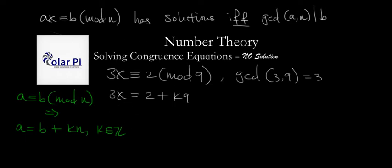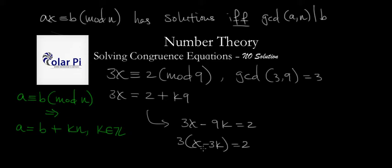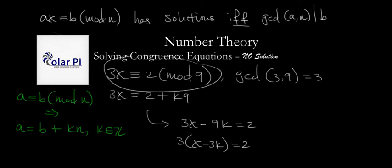We can translate this equation to read as follows: 3x minus 9k equals 2. On the left side of this equation, we can factor out a 3, and when we do, we get 3 times (x minus 3k) equals 2. Now, x has to be an integer and K has to be an integer, and therefore x minus 3k has to be an integer. So the left side is 3 times an integer, meaning it's a multiple of 3. But how can a multiple of 3 equal 2? Well, it can't. Therefore, we just showed that this equation has no solutions.